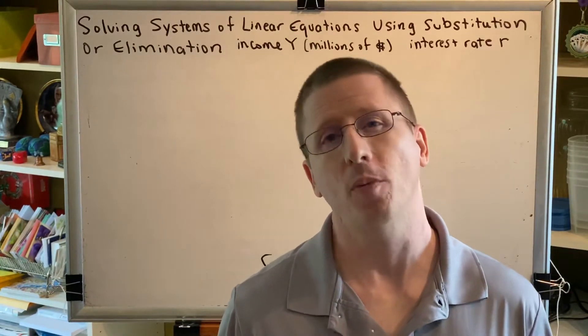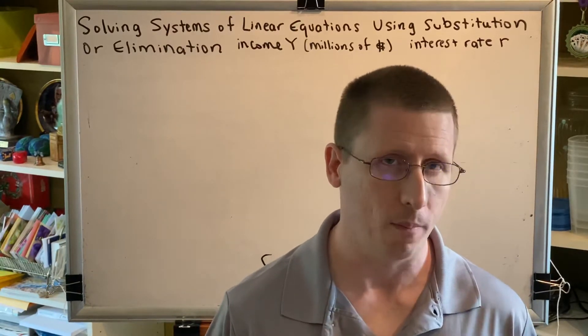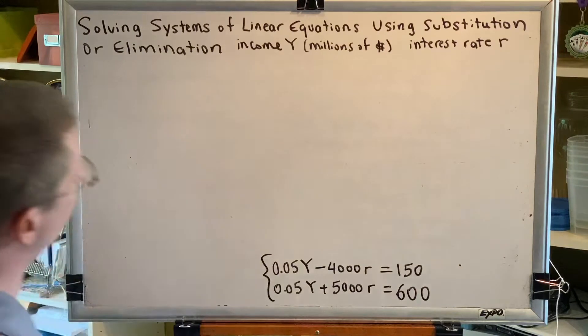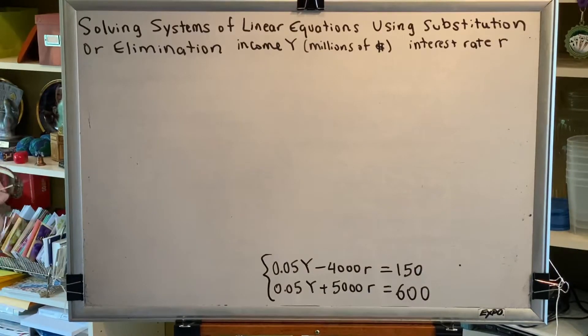So to get them to be opposites, I just need to multiply one equation, either the top or the bottom, by negative one on both sides. So which equation should we choose? It doesn't really matter. So in this instance, let's just go ahead and do the top equation.